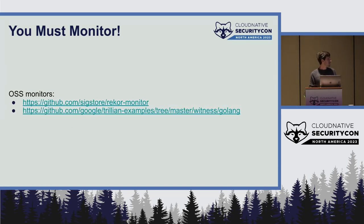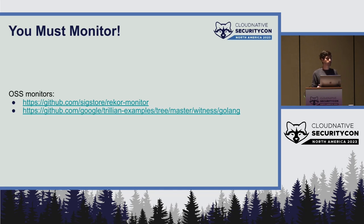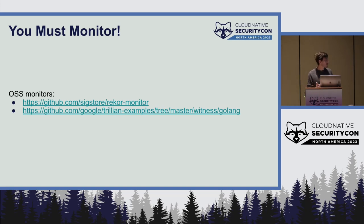I've left a couple of links here to some of the monitors we're working on. One is in the SigStore organization called Recore Monitor, which I along with Purdue University have been working on. This can run on GitHub Actions, which is useful for monitoring public transparency logs, but you can also operate it yourself. Another monitor was created by the team behind Trillian, which is a scalable Merkle tree service that actually backs Recore and certificate transparency. If you're interested in talking more about monitors, I'm happy to do so after the talk.